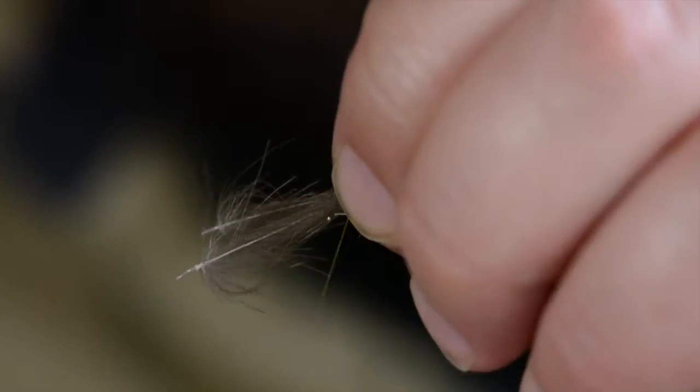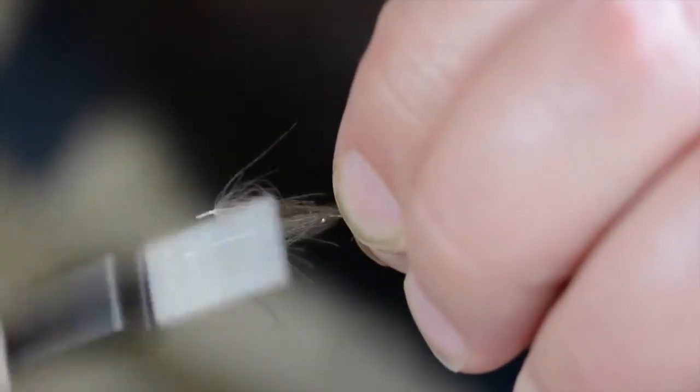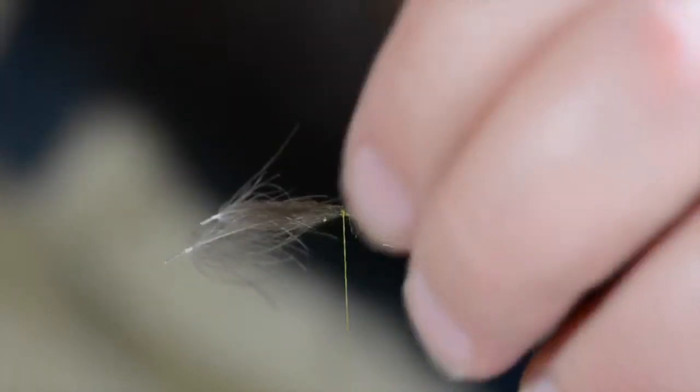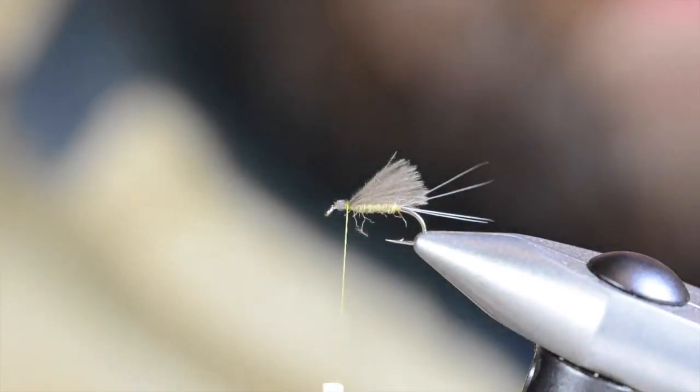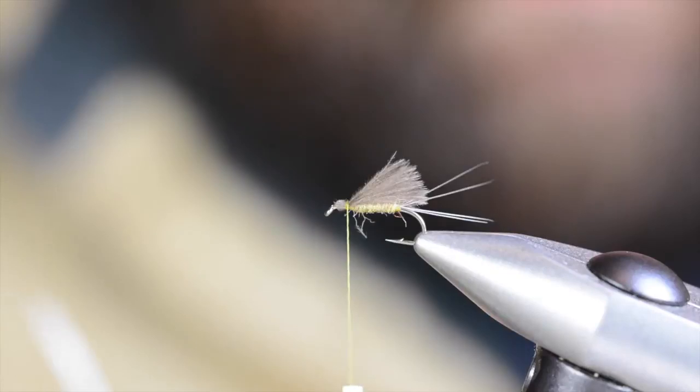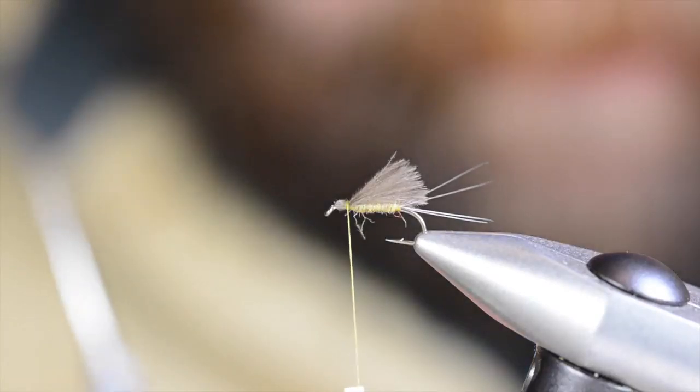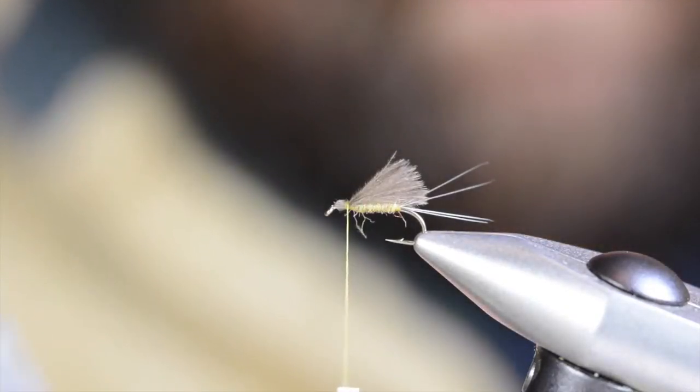I'm going to go about to the back of the hook here. Tie those guys down, clip the butts. I've got some medium zelon, and I'm going to get a little chunk of it, not a whole wide piece but maybe about a quarter.